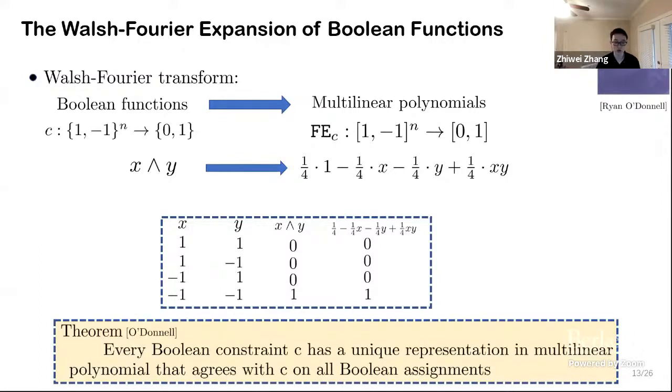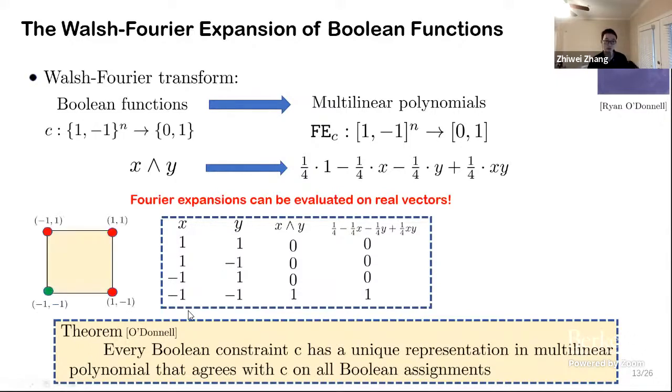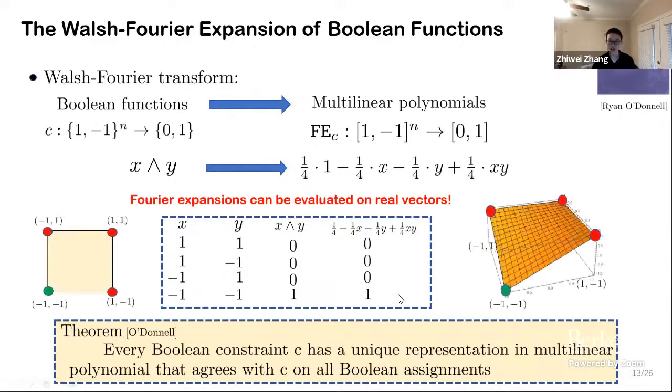This phenomenon is general in the sense that every single Boolean constraint has a unique representation, a multilinear polynomial that agrees with the constraint on all the Boolean assignments. But what happens on the real vectors? The polynomial itself does not prevent us from evaluating it on real vectors. If we do so, we may generate a surface in high dimensional space, which is useful in our framework.